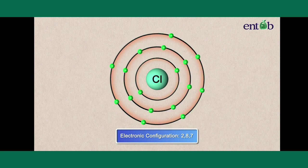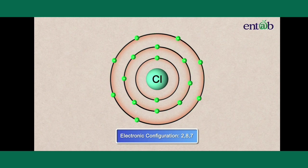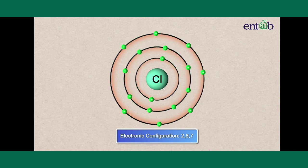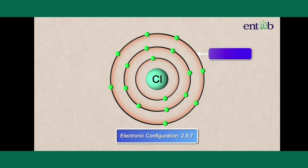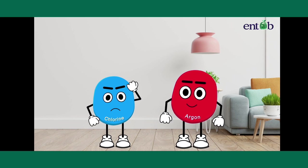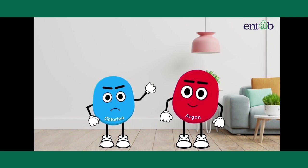It tried various permutations and combinations to have a completely filled valence shell. But no matter which arrangement it tried, it always ended up with seven electrons in the valence shell. Chlorine was sad once again.